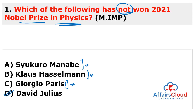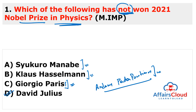Remember, David Julius is an American scientist, and along with another scientist Ardem Patapoutian — both American scientists — they won the 2021 Nobel Prize in Medicine (not Physics) for their discoveries of receptors for temperature and touch.